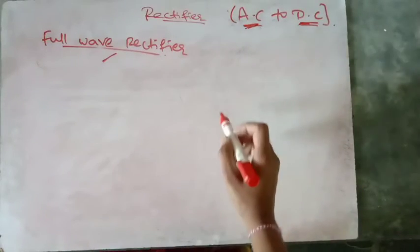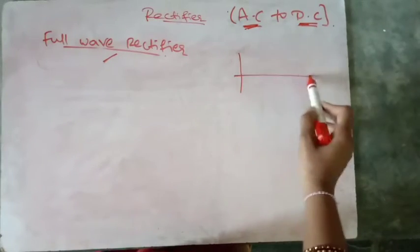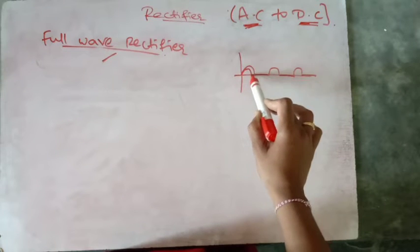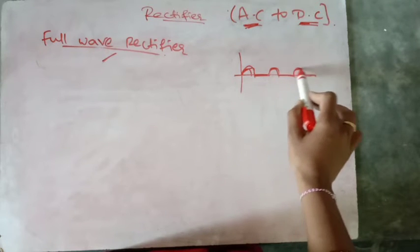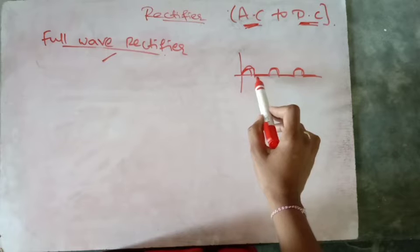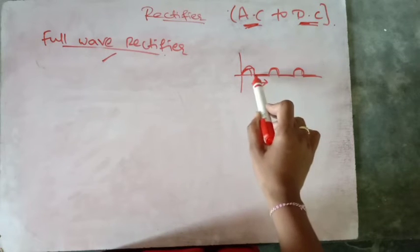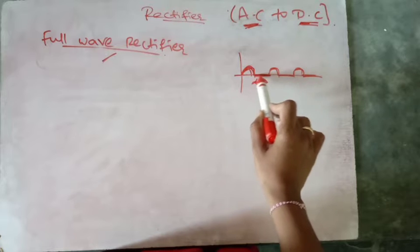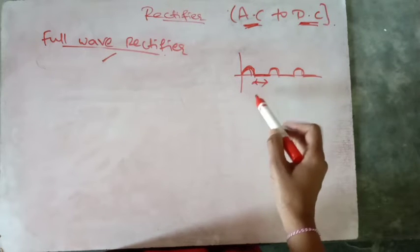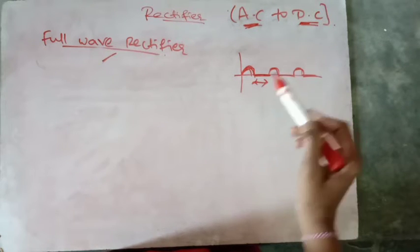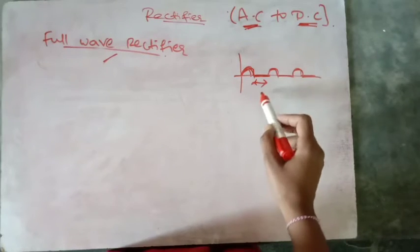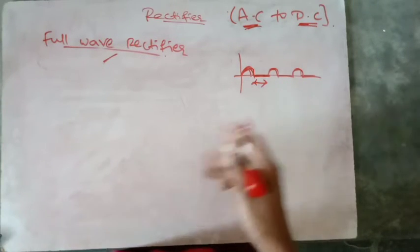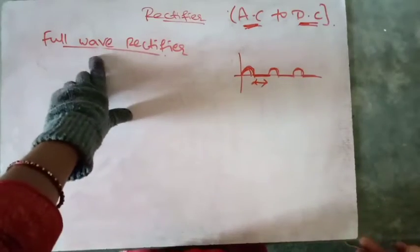In half wave rectifier, the output will be, for a given input, we have only positive output. That means here the time taken is more for charging a mobile or charging any electronic appliances. To reduce this, we are using full wave rectifier.